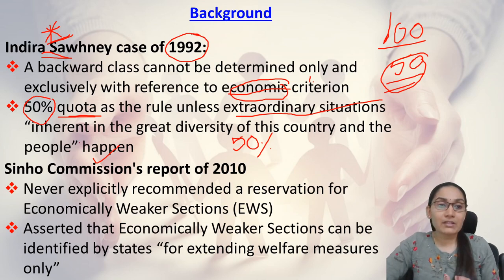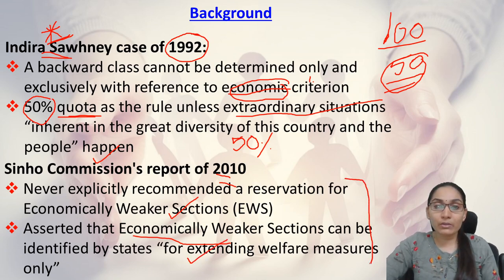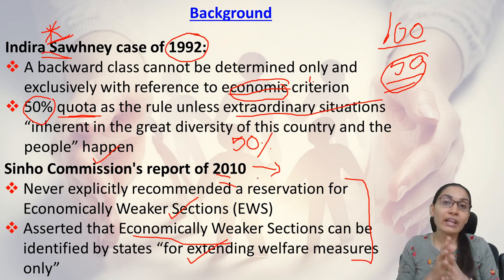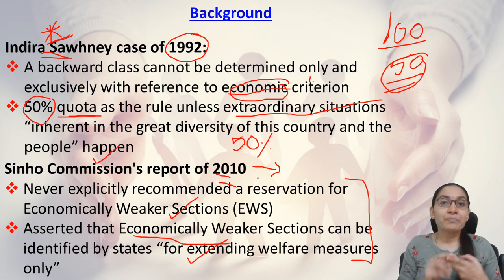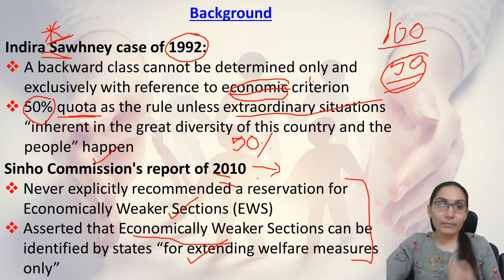The Sinho Commission report of 2010 never explicitly recommended reservation for economically weaker sections. It asserted that economically weaker sections can be identified by states for extending welfare measures only — not reservation. The commission also said that reservations should be made on the basis of social backwardness, not economic backwardness, and that state governments can take up welfare measures for the economically backward, but reservation is not a solution for economic backwardness.